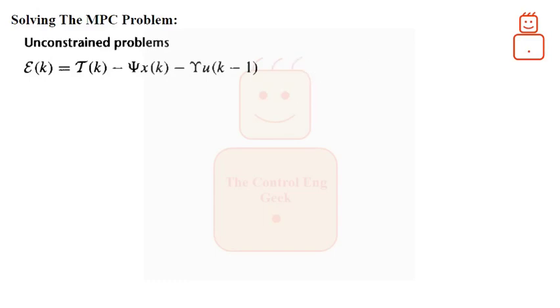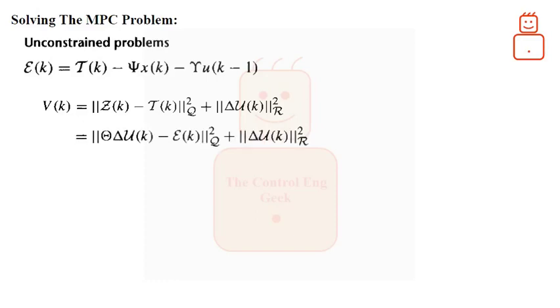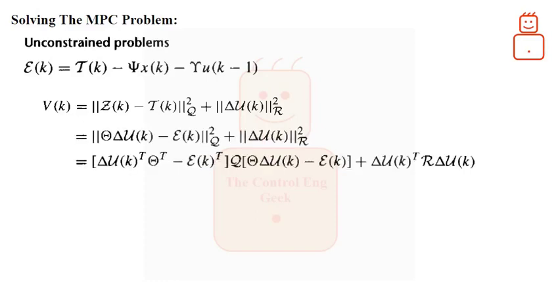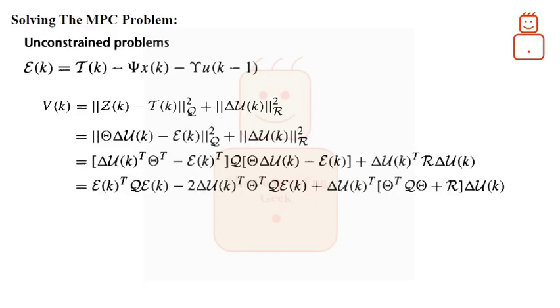With this definition, we can reformulate the vector matrix form of the cost V of k as following. Now, by applying the norm definition, we can expand this relation even more as. And finally, we can write it in the form of a quadratic function as.